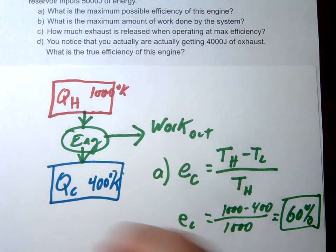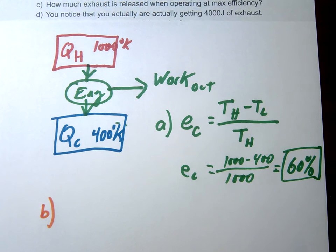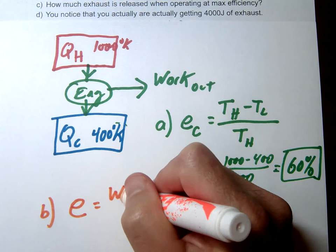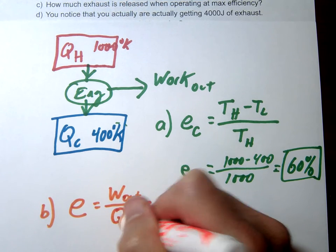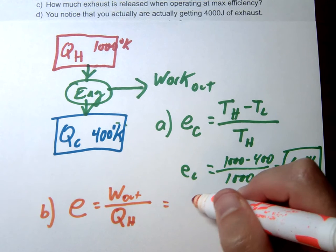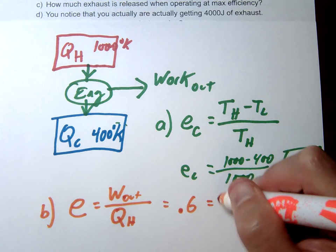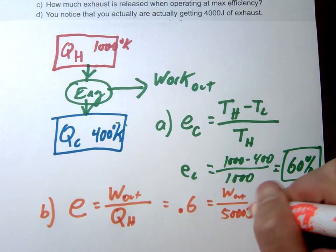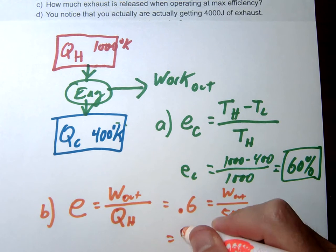So letter B is saying maximum amount of work. So if we are operating at 60% efficiency, how much work could we get? So remember the definition of efficiency is output versus input. So this would be the work that we're putting out. The heat that we're putting in would just be our high temperature region. So in this case, if we're getting 60% efficiency, we want to see how much work we get out. Well, if we put 5,000 joules into that system, then we are going to get 3,000 joules of work.